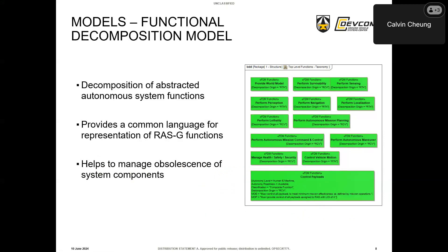Next is the functional decomposition model, which provides the decomposition of abstracted autonomous system functions that can be used to build a system in satisfaction of a particular mission. It provides a common language for representation of RAS-G functions, including metadata such as pedigree, maturity, measures of effectiveness, measures of performance, and responsible parties. Overall, it can help manage obsolescence of system components by providing insight into where the hierarchy of functions are vulnerable to new technologies, how to mitigate and replace modular components over time, and it allows you to find potential gaps in technology by exposing common functions performed in critical or dangerous mission segments. High-level functions include perform perception, perform navigation, and perform autonomous maneuver, which get broken down into lower levels.